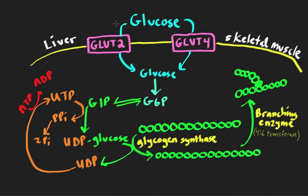Inside either skeletal muscle or liver, the first step of phosphorylation of glucose is the first step of glycolysis. That enzyme is glucokinase in the liver and hexokinase in skeletal muscle. Either way, they're doing the same thing — phosphorylating glucose, trapping it inside the cell, and committing it to a variety of different pathways. The G6-phosphate is then converted to glucose-1-phosphate by an enzyme called phosphoglucomutase. This is reversible, has no important clinical correlations, and is not regulated, so it's not highlighted as a key enzyme.